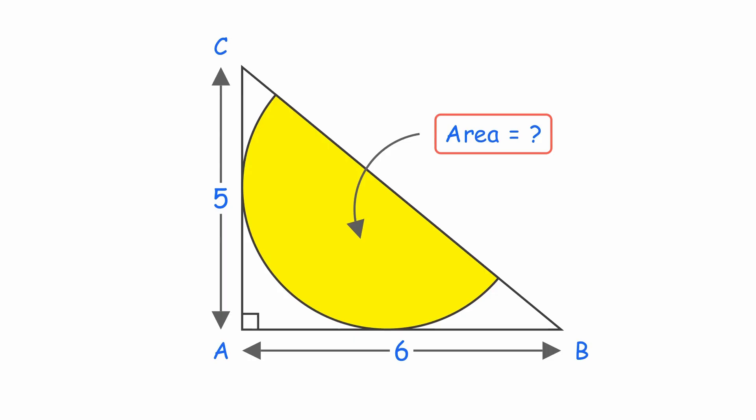To do that, we first need its radius. Drop a perpendicular from the center of the semicircle onto the sides of the triangle. Let the radius be R.